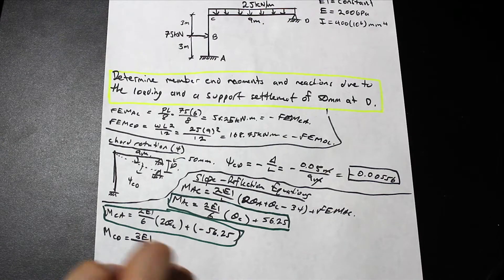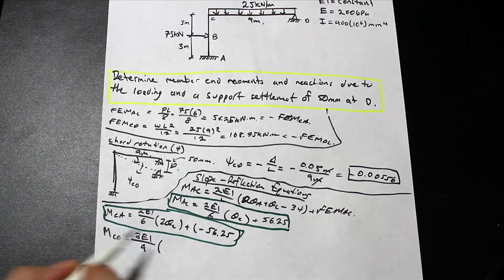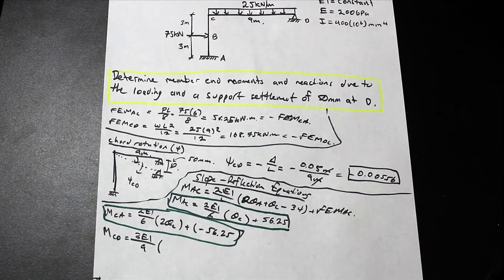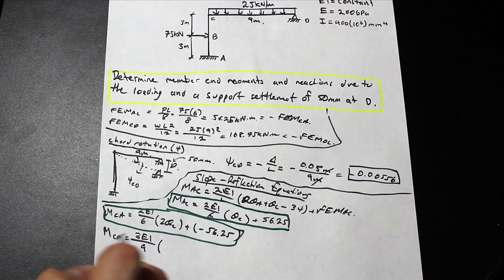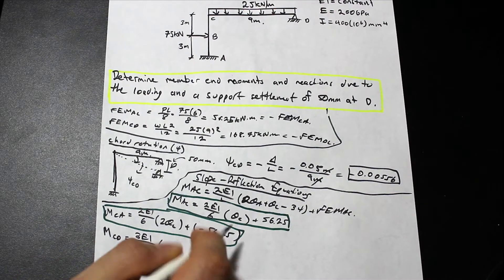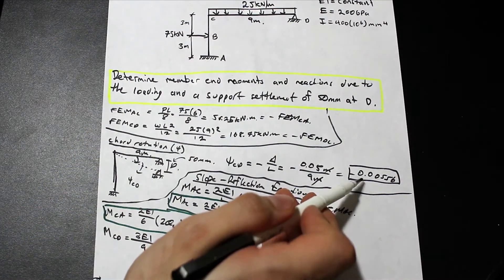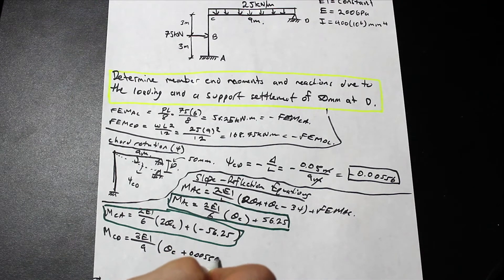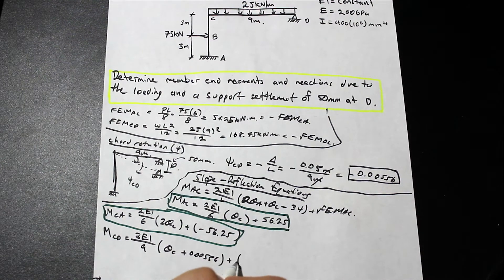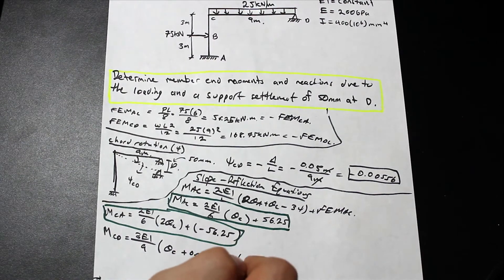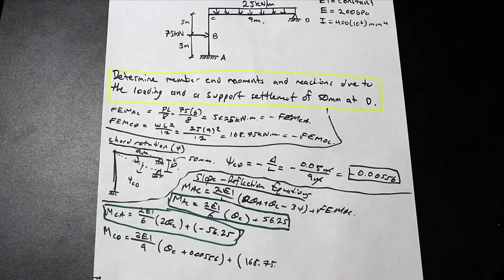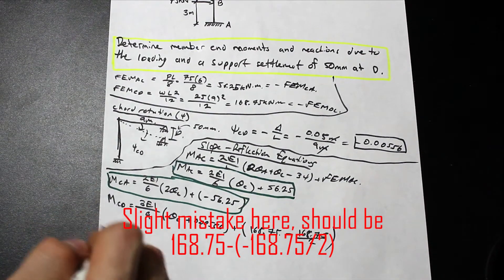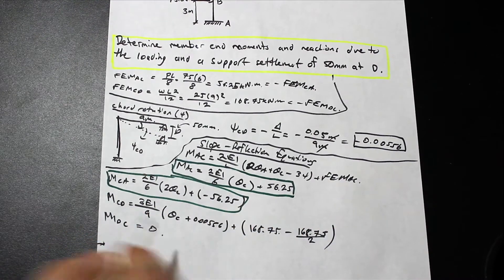For member CD we use the modified slope deflection equation since D is a roller. MCD equals 3EI over L, where L equals 9, times (θ_C − ψ_CD) plus FEM_CD modified. Psi_CD is negative 0.00556, so we subtract that negative value, and FEM_CD modified equals 168.75 minus 168.75 over 2. MDC equals zero by the modified equation — the roller end moment at D is zero.